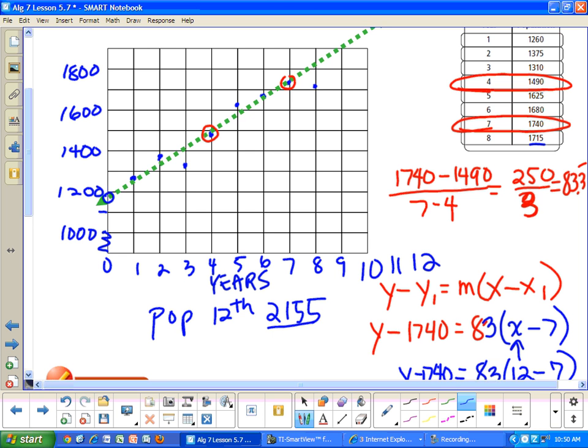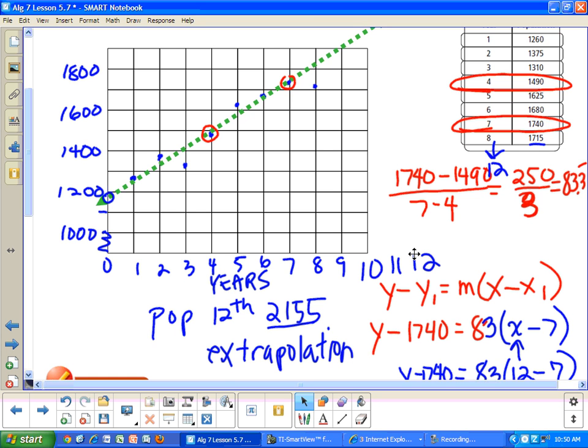Now, when you go outside your data, notice that year 12 is beyond this data. That's called an extrapolation. Extrapolation is when you're beyond your data. If you're inside your data, that's called an interpolation.